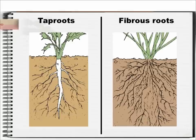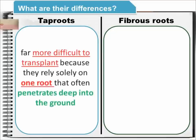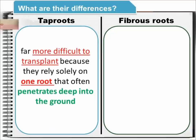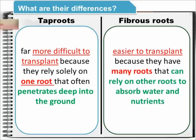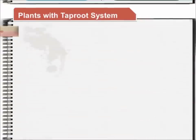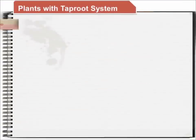In terms of transplanting, taproots are more difficult because the primary root penetrates deep into the ground. Fibrous roots are easier to transplant because they have many roots that can absorb water if the others were damaged.